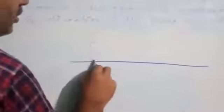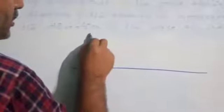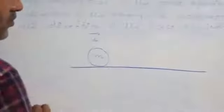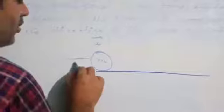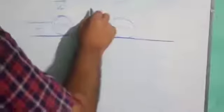Suppose there is a body of mass M, its initial velocity is U. You exert a constant force F on it for time T, due to which the object acquires a final velocity V under uniform acceleration A.